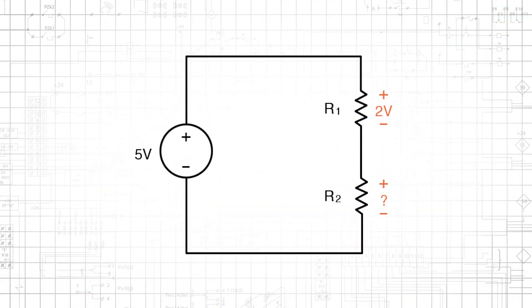Voltage changes between one terminal of a component and another terminal of the same component, and this is called a voltage drop.